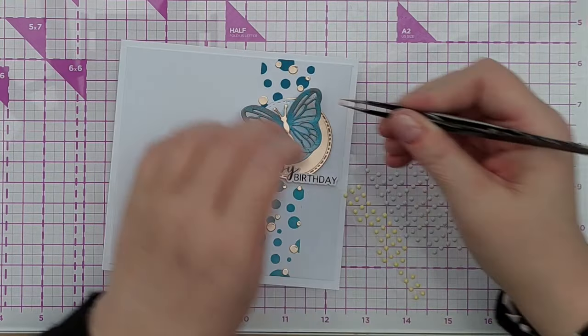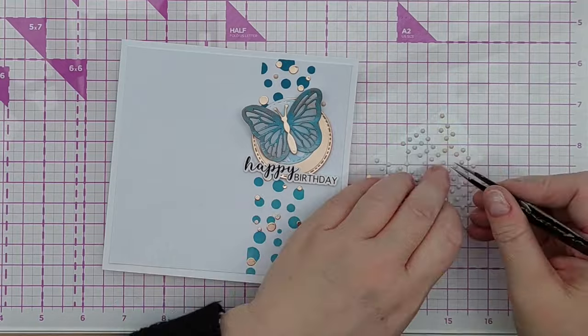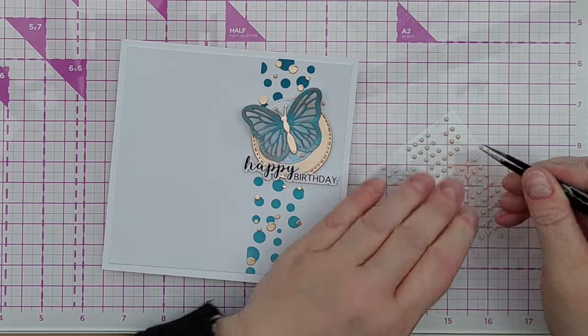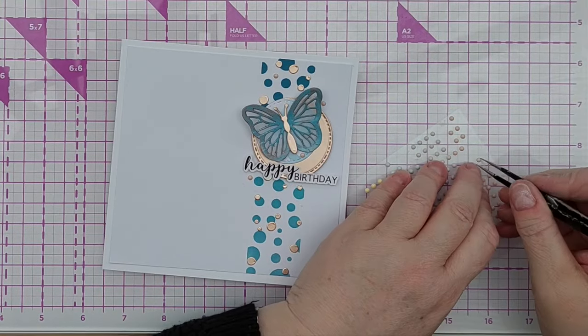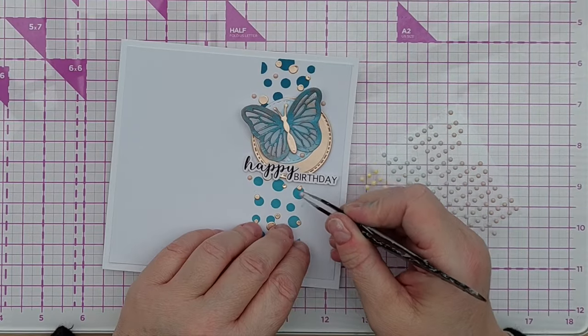As a finishing touch, I added some mini enamel dots that were a peachy color, and that worked really well with the rose gold cardstock. And that's it, that's this card done, short but sweet today. I hope you've enjoyed the video and that you like the card.